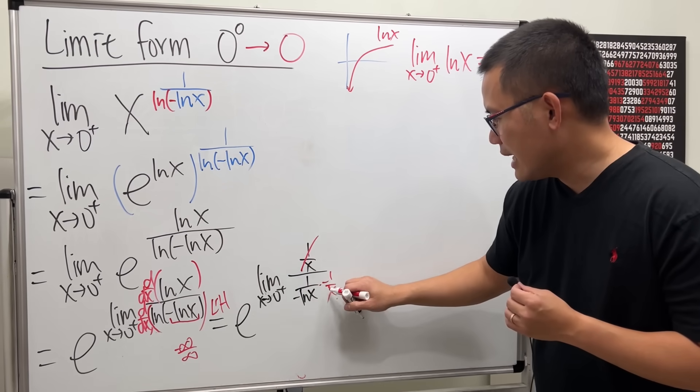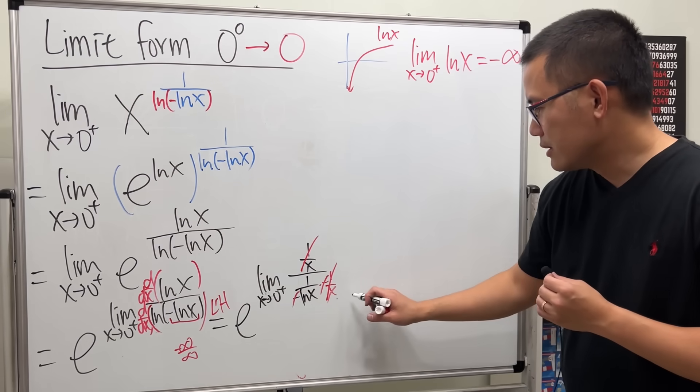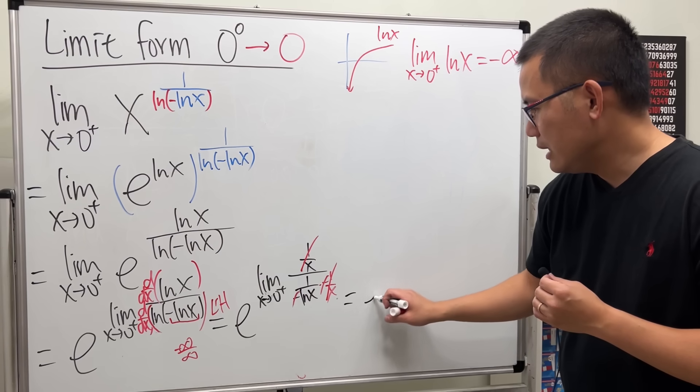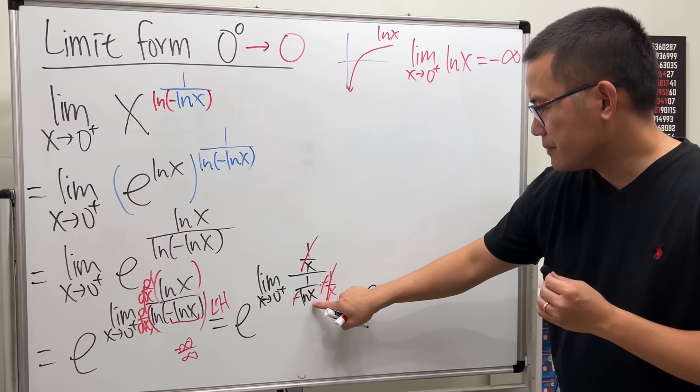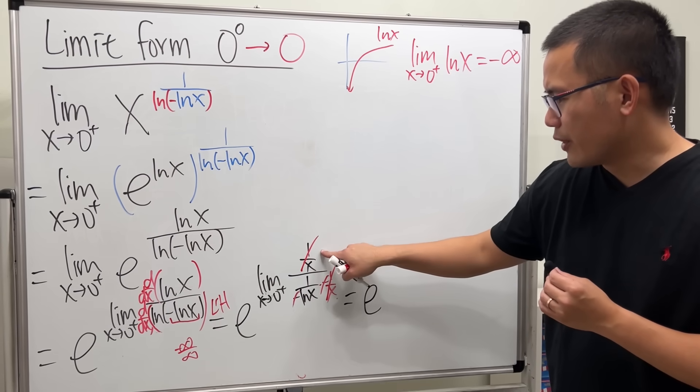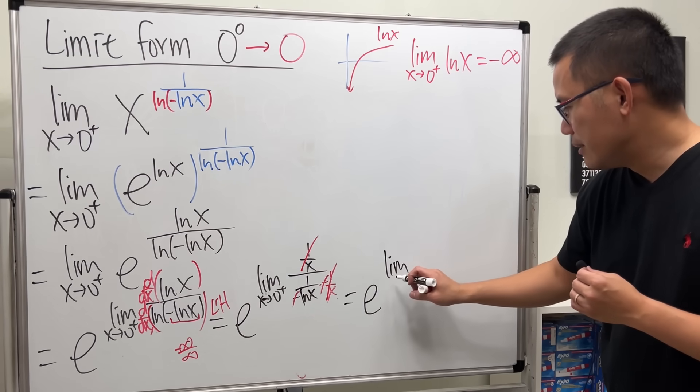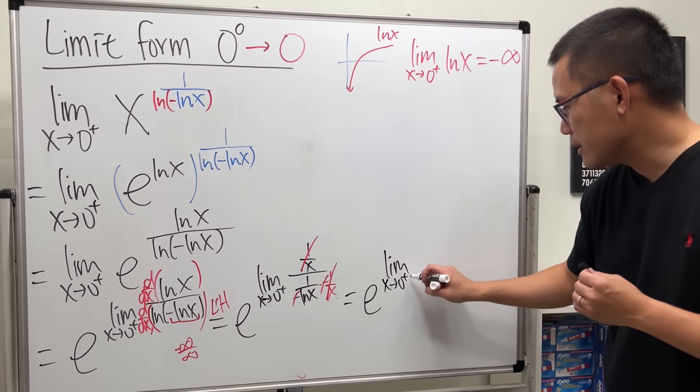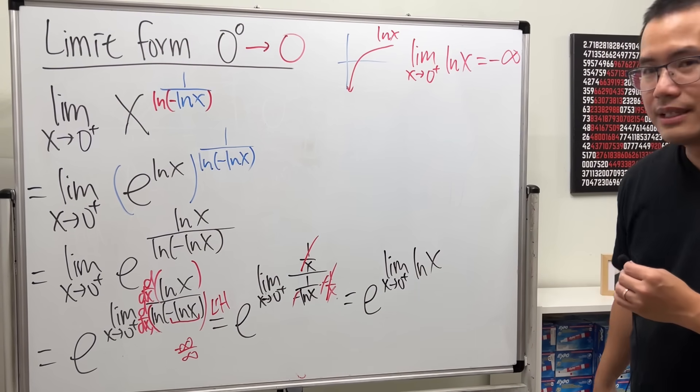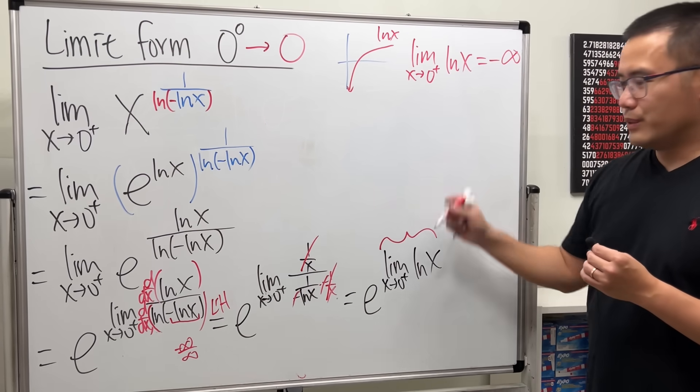This and that cancel, negative negative negative cancel. So this right here becomes e, and lnx goes to a numerator. So it's just limit as x approaching zero plus of lnx. But this thing is this, which is negative infinity.